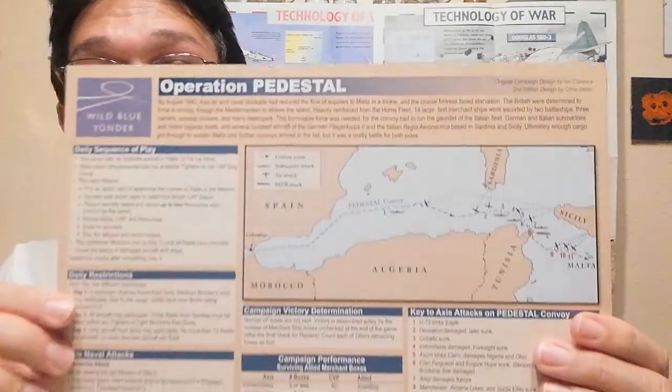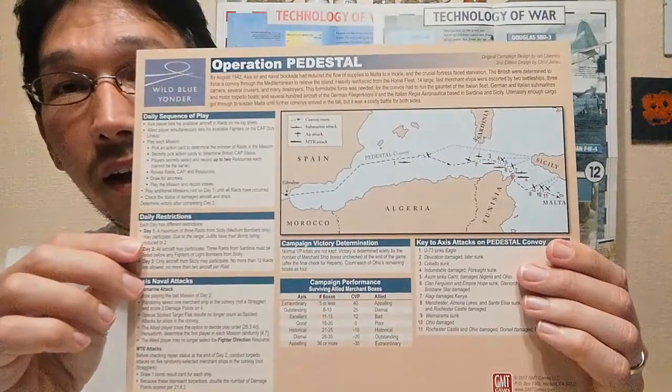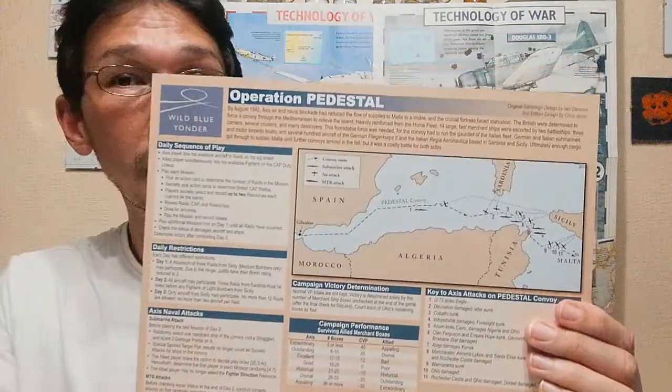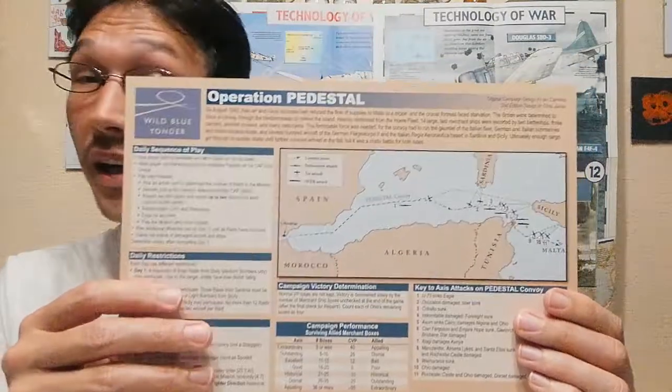As extra chrome, it's not just about dogfights. There are campaign missions. You can fight specific campaigns. In this case, this is the card for Operation Pedestal. So once you get used to the dogfights, you can then introduce bombing missions.